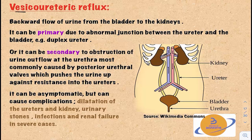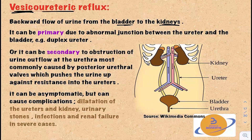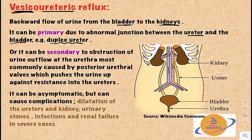Next is vesico-ureteric reflux. The word vesico refers to the urinary bladder, so this is the backward flow of urine from the bladder into the kidneys. This can be primary because of abnormal junction between the ureter and the bladder, something like duplex ureter that we're going to discuss in a minute. Or it can be secondary to obstruction of urine outflow at the urethra, most commonly caused by posterior urethral valves, which can push the urine up against resistance into the ureters.